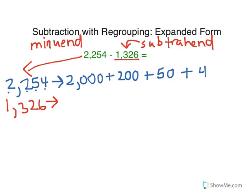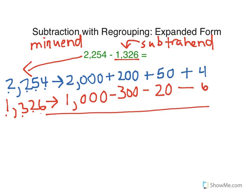Now let's expand this one out. The value of the digit 1 in the thousands place is 1,000. I'm going to put a subtraction sign here because we're subtracting. The value of the digit 3 in the hundreds place is 300. The value of the 2 in the tens place is worth 2 tens, so that's 20. And the value of the digit 6 in the ones place is 6 ones.